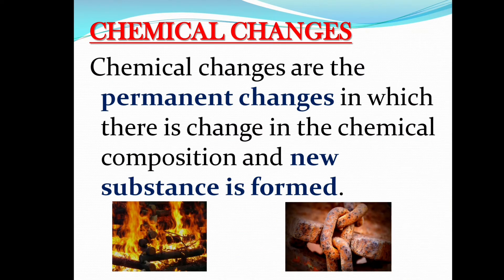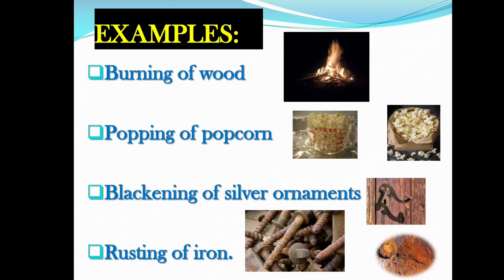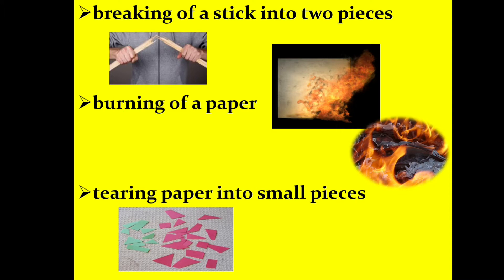Chemical changes are permanent changes in which there is a change in the chemical composition and a new substance is formed. Examples: burning of wood, popping of popcorn, blackening of silver ornaments, and rusting of iron. These are all examples of chemical changes.